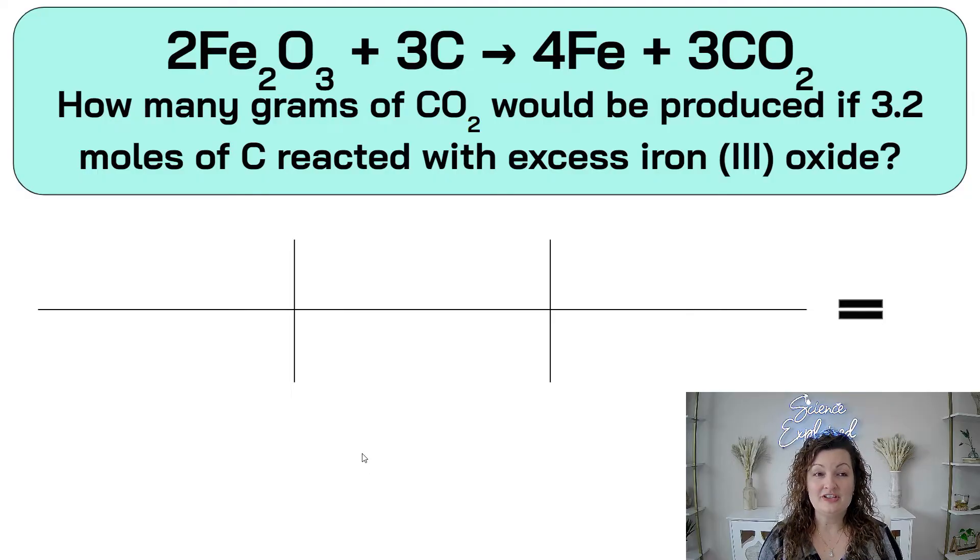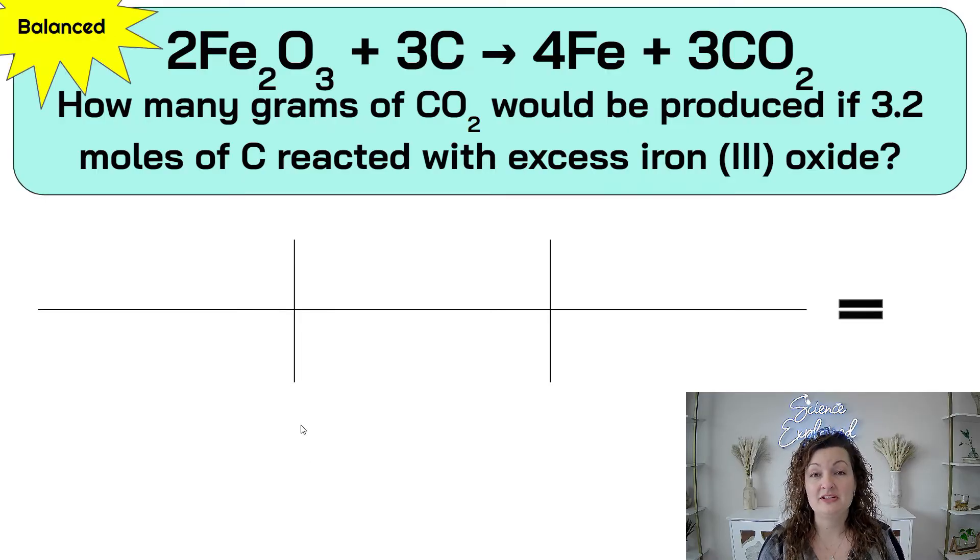So our first question says, how many grams of CO2 would be produced if 3.2 moles of carbon reacted with an excess iron III oxide? First up, this equation is balanced. I went ahead and checked it already. But I need you guys to make sure you're always checking to make sure your equation is balanced. If not, balance it first and then do your bridge second.